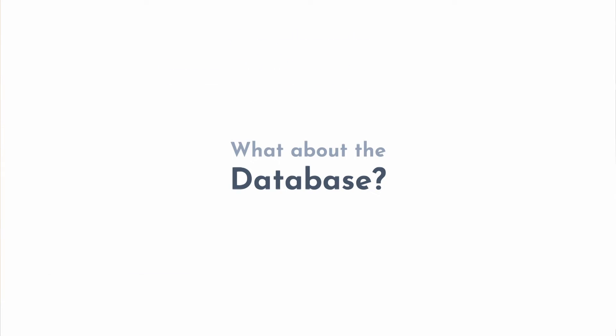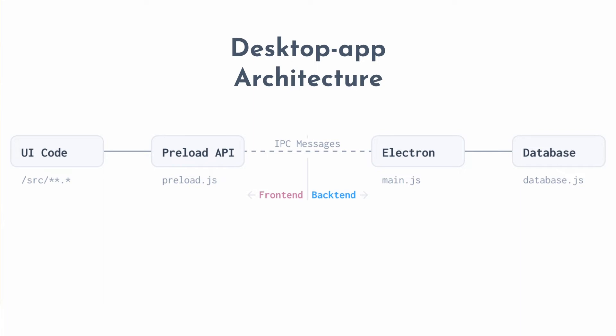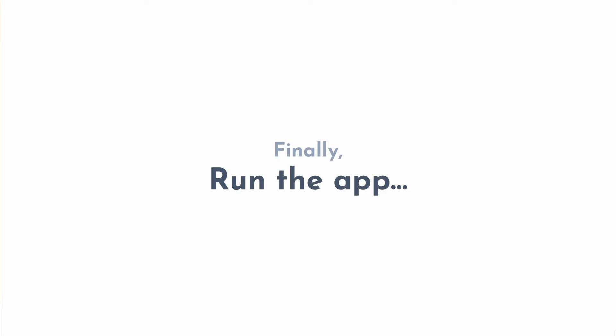We still need to hook up the database. We already have database.js. Similar to how I updated the Fastify calls, here I update ipcMain with database calls — database.read and update. The architecture is similar to the web architecture. The only difference is we've swapped out the API caller with the preload API and the server with Electron. The UI code and database remain the same. Finally we run the app, and we have a desktop app.